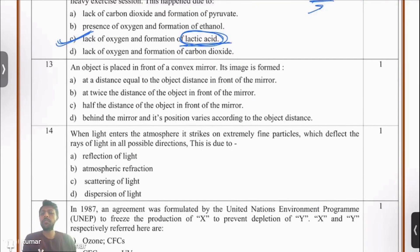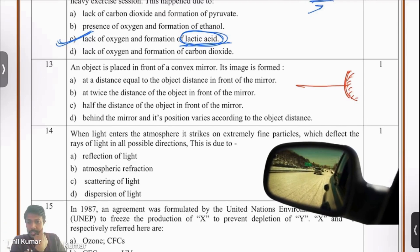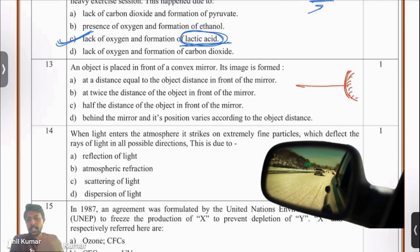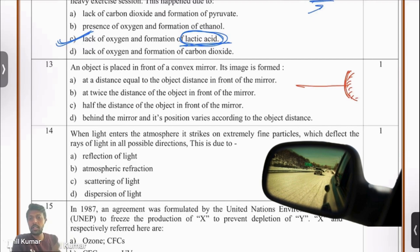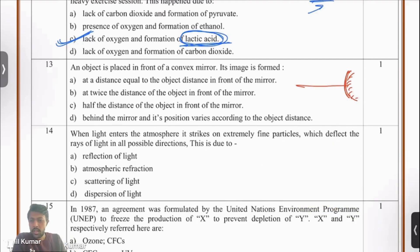Let's move on to question number 13. An object is placed in front of a convex mirror. Let me draw the schematic quickly. An object is placed in front of the convex mirror. Its image is formed. Where is its image formed? That's the question. Now, you can come from the application of convex mirrors. We all know that convex mirrors are used in the rear view mirrors of our cars and vehicles.